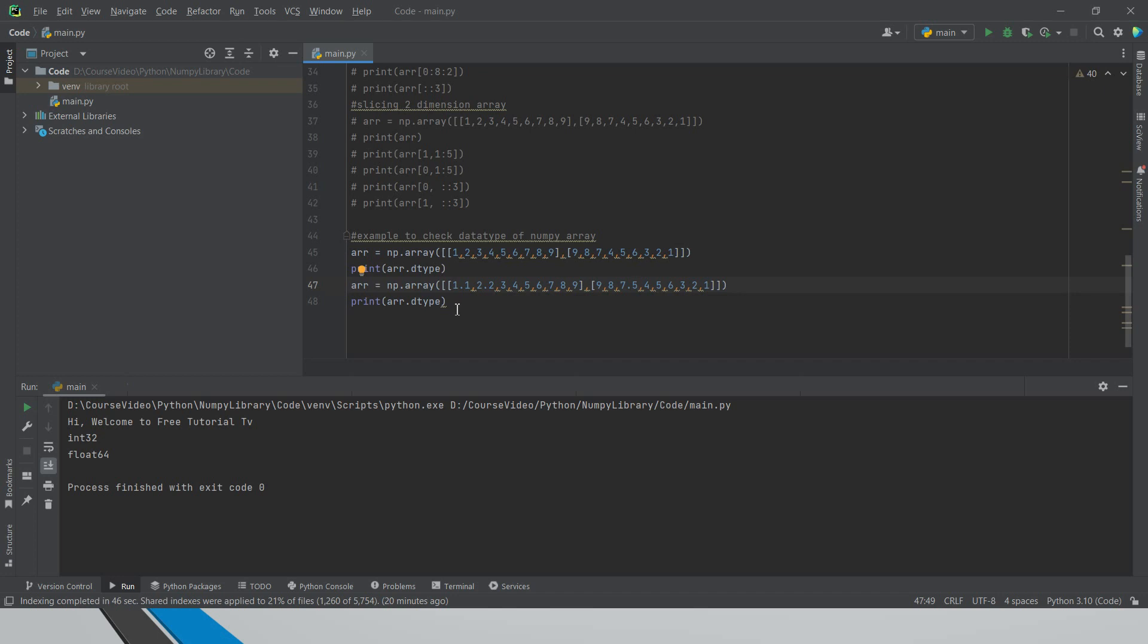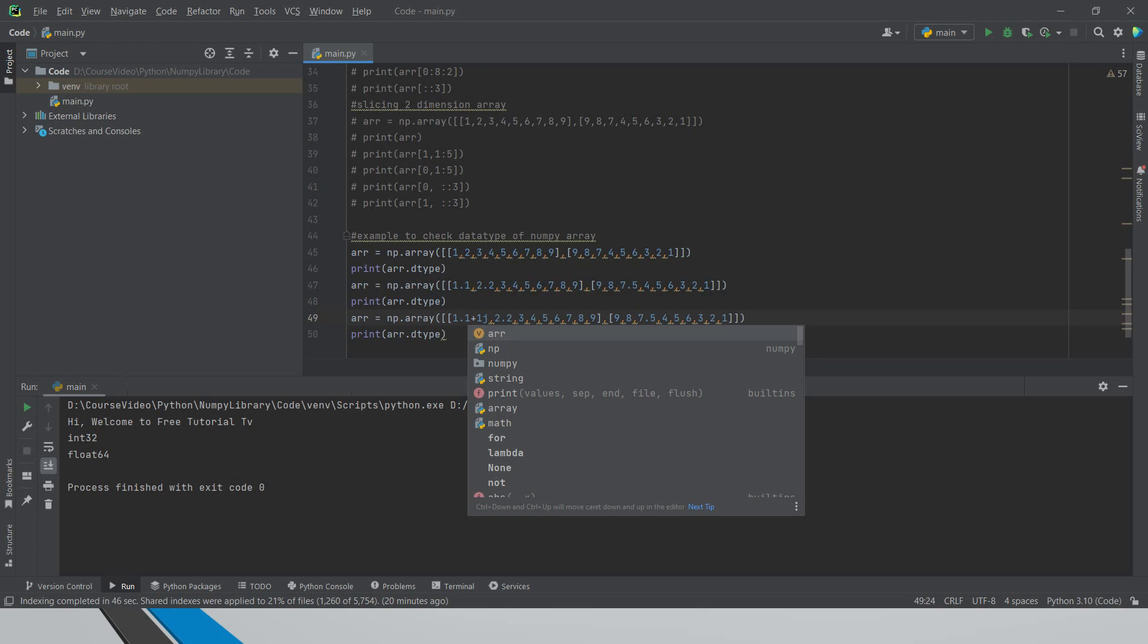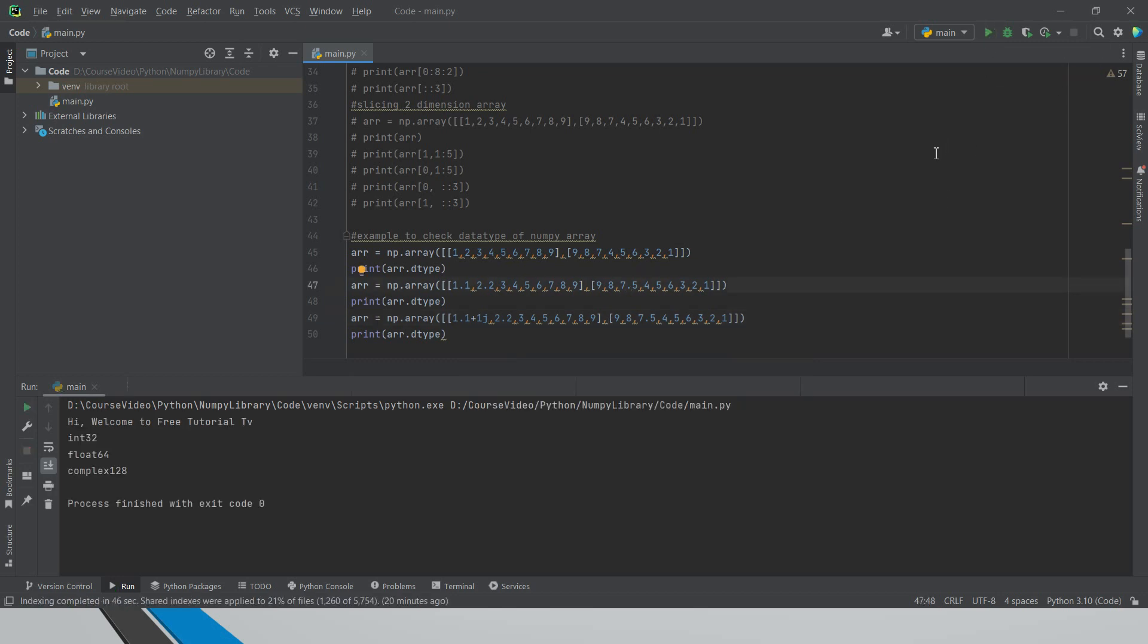And if I put another data type, say something like plus 1j. If I give something like this, what happened? So it's a complex128. Just you include just one of the dataset that changes everything into the dataset.